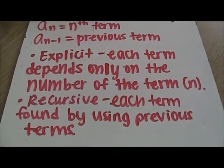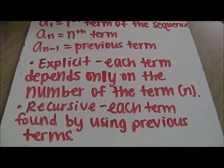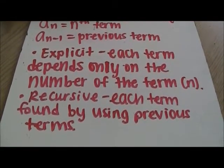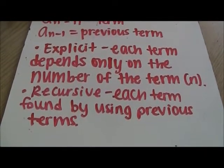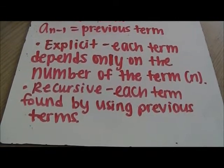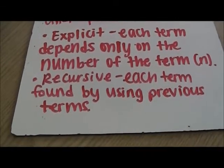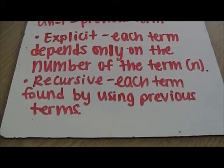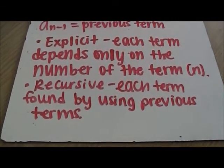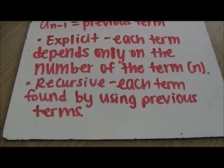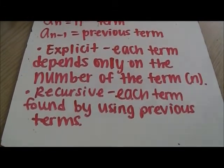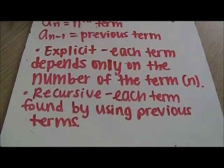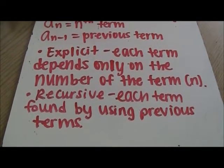So again, explicit is just each term depends only on the number of the term, n. And recursive is each term found by using previous terms. Both of these are ways to find numbers in a sequence.